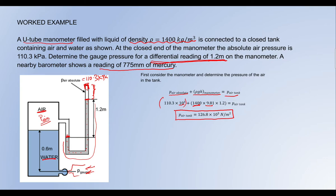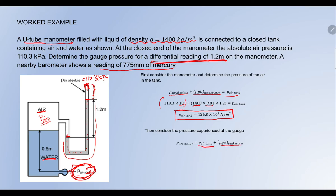The pressure experienced at the gauge equals the pressure of air plus the pressure due to water. Now let us find the absolute pressure at the gauge. Consider the pressure experienced at the gauge: P_absolute(gauge) = pressure in the tank plus the pressure due to the water in the tank.